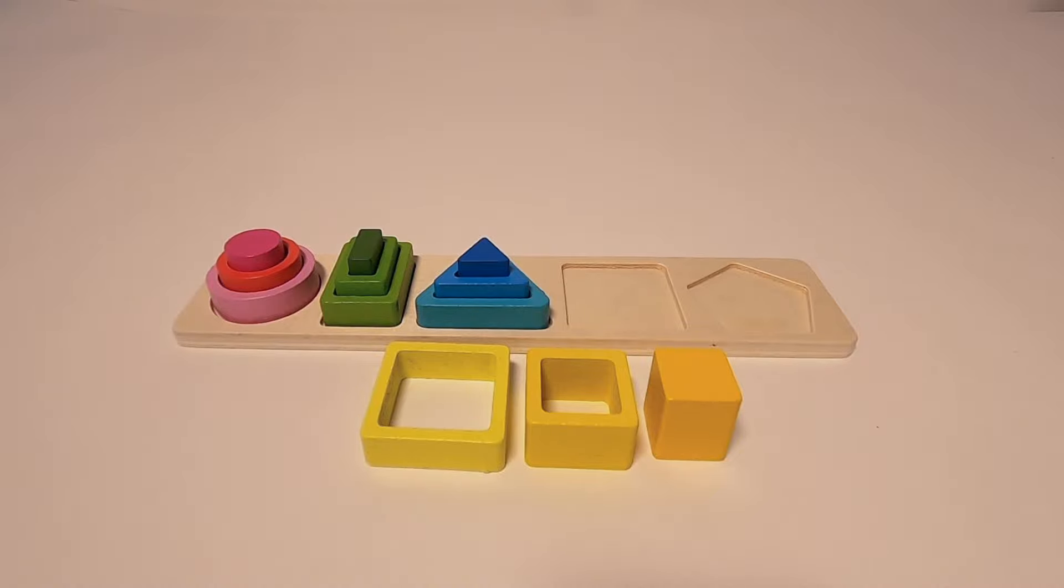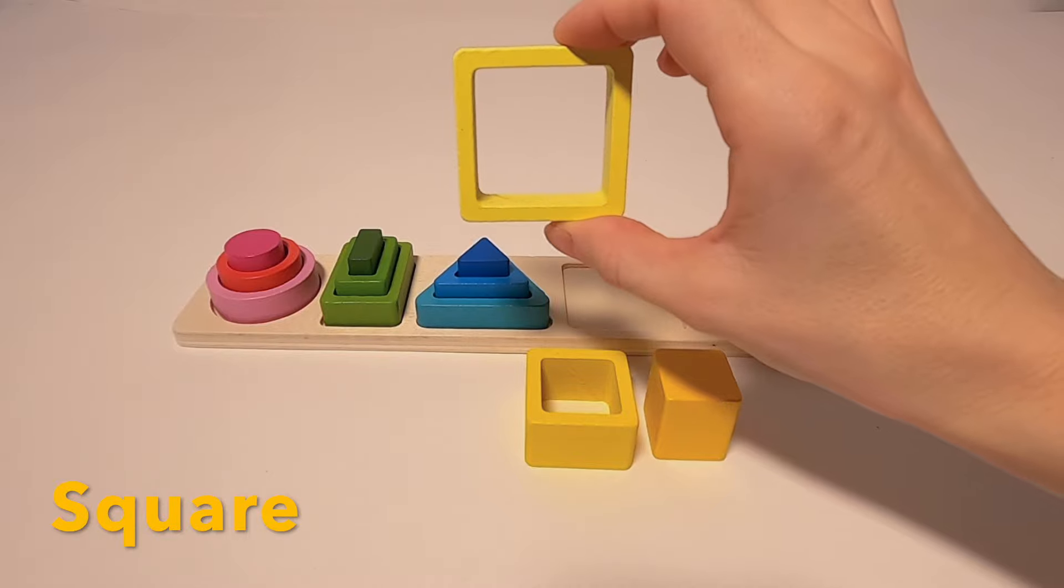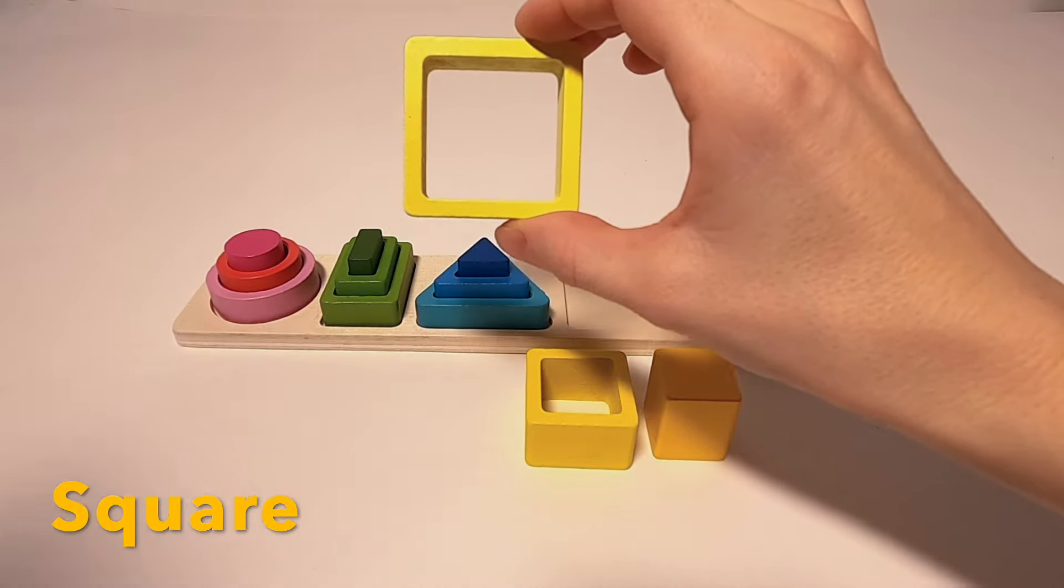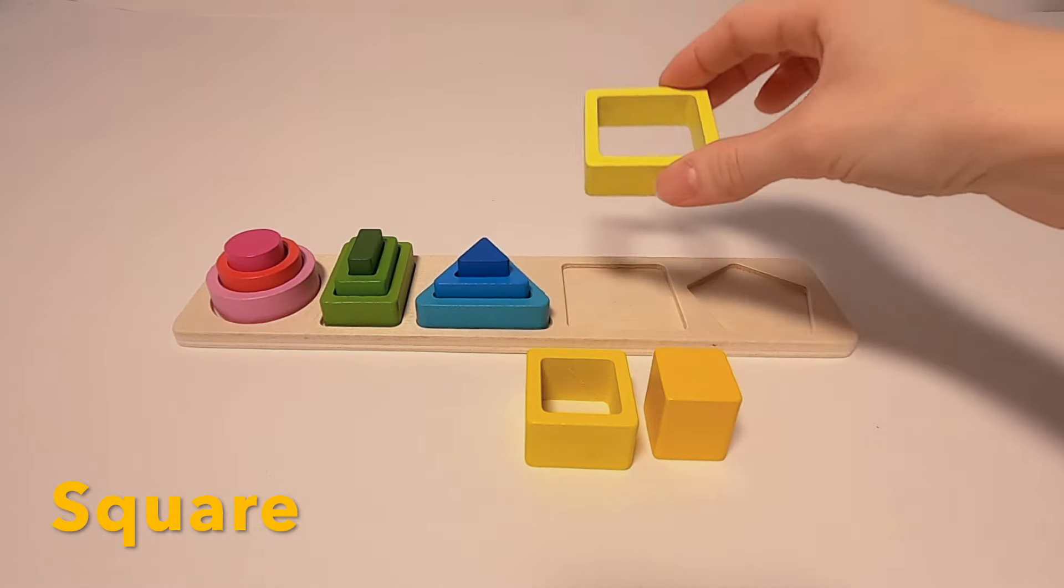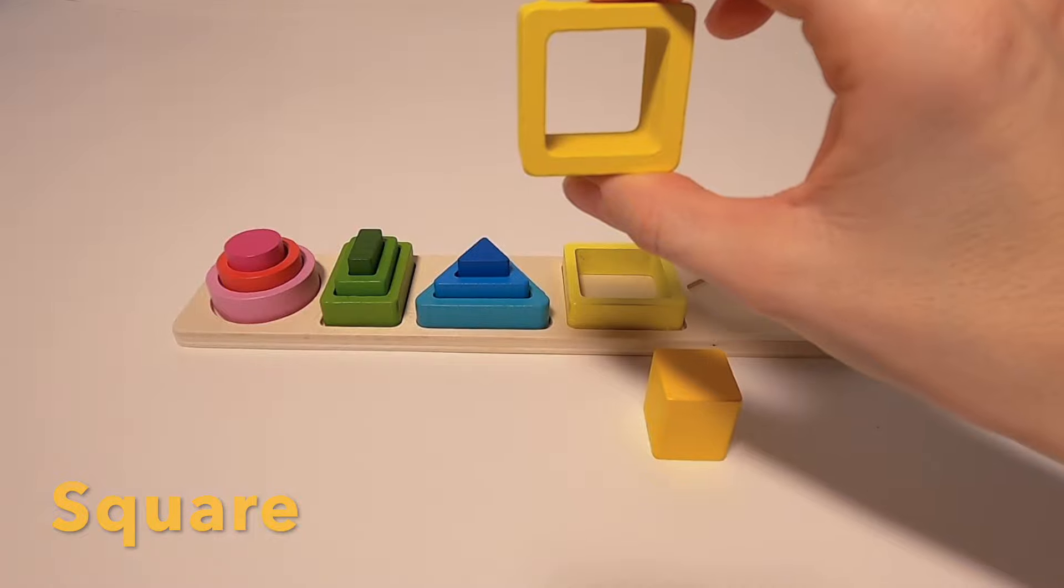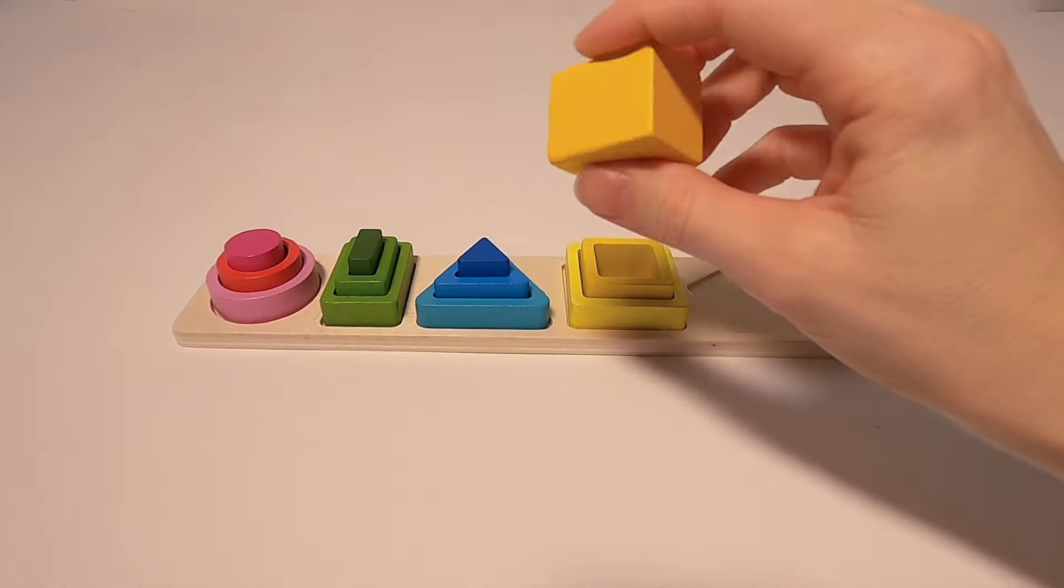Next up we have the square. I know that it looks like the rectangle—because it is. The difference is, with a square, all sides have the same length. And also here we have the three different sizes: big, medium, and the small one that looks like a dice.